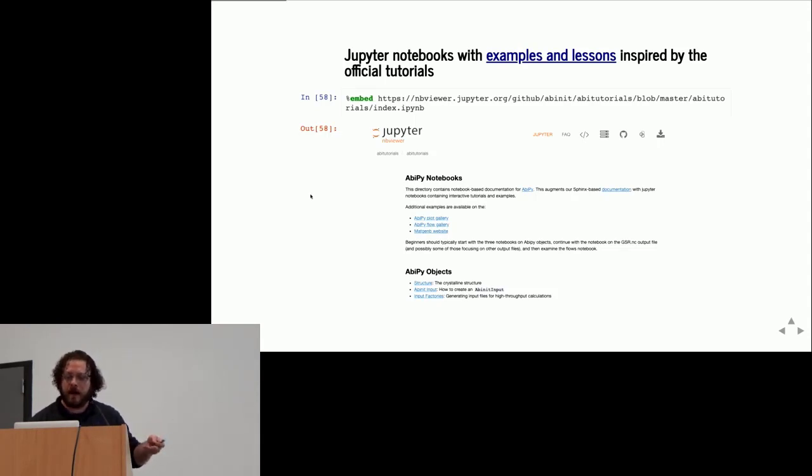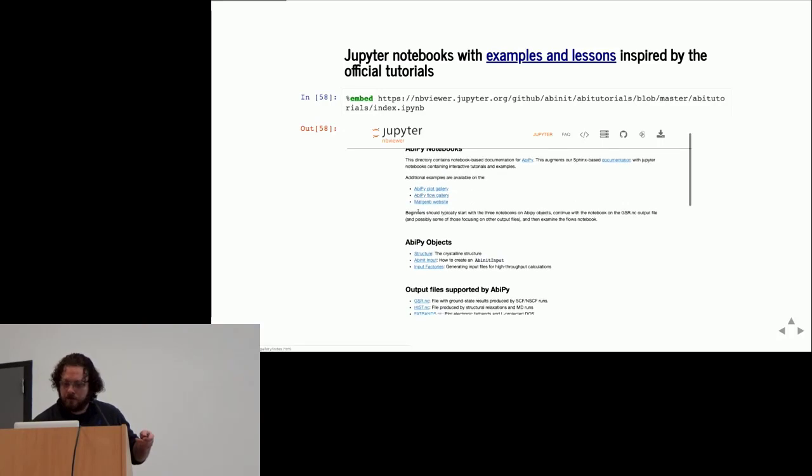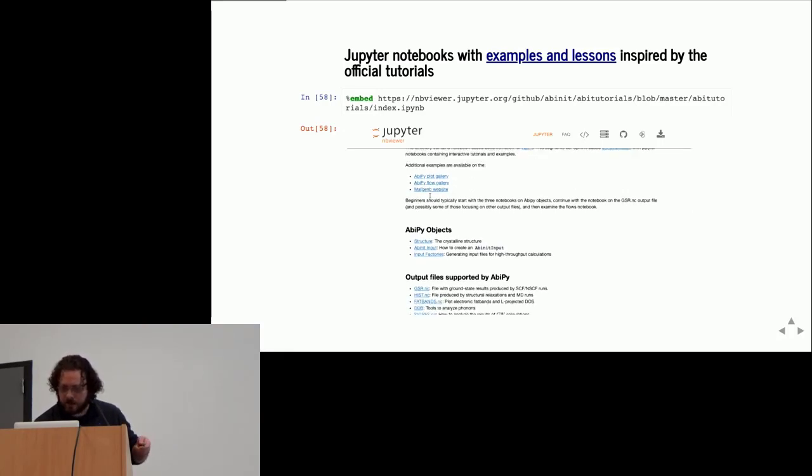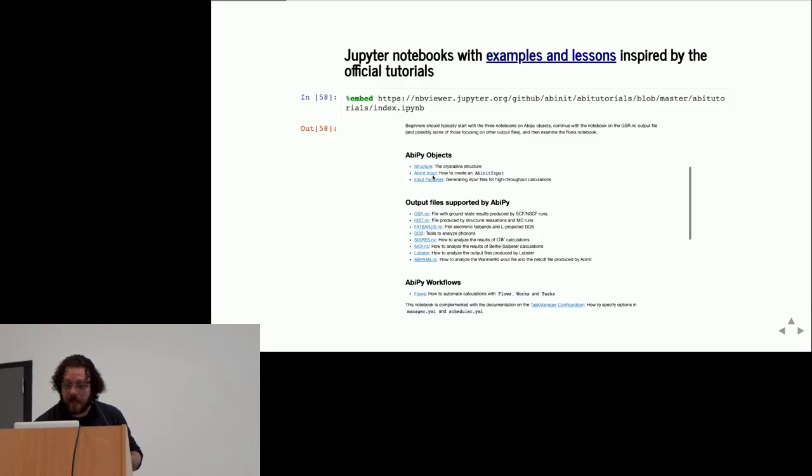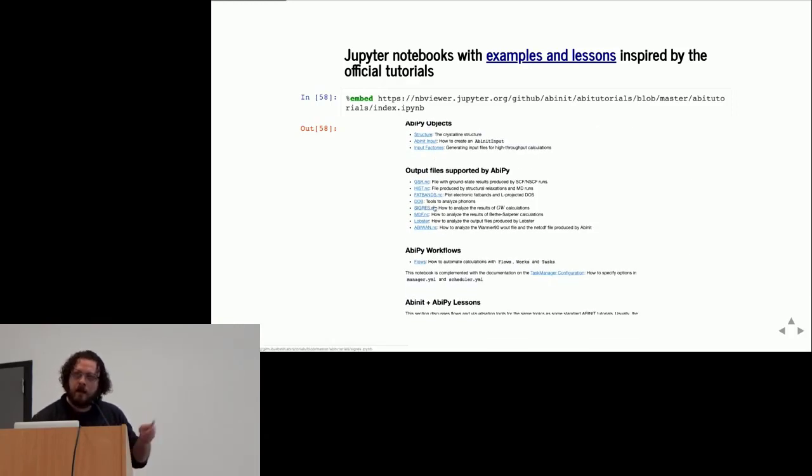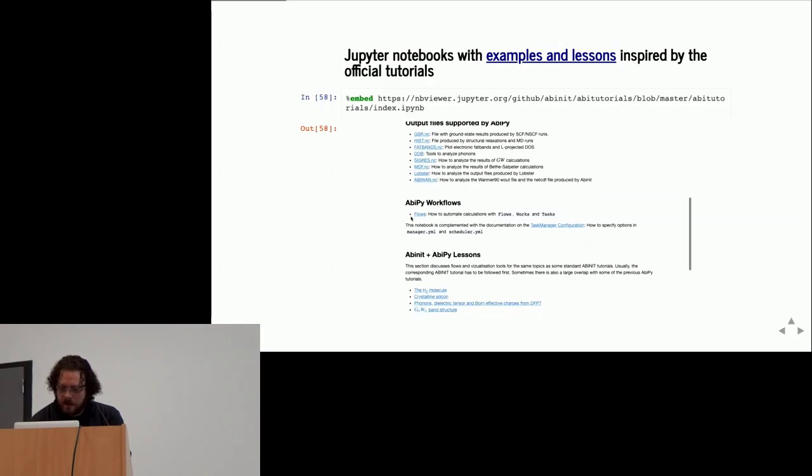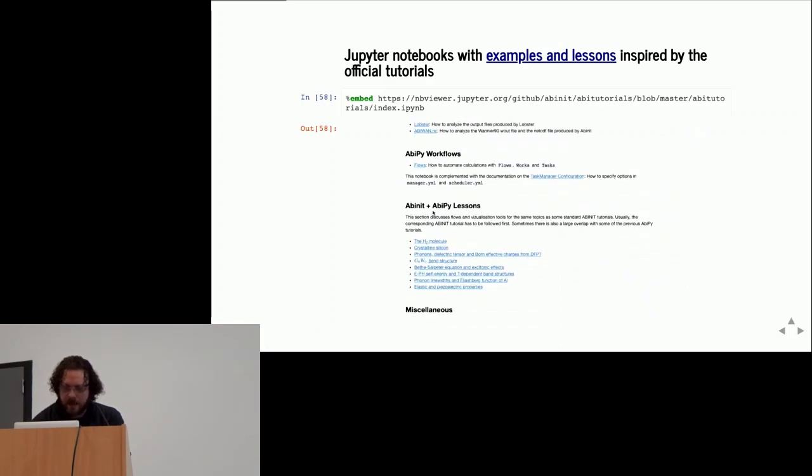The idea is to rewrite some of the official ABINIT tutorials in Python with AbiPy. This is the notebook where we have the first part with links to the Materials Project and PyMagen for each object. We documented the API and methods. For each output file, we have a notebook with examples showing how to produce figures or tables. In the last part, we have the ABINIT plus AbiPy lessons inspired by the official tutorials, but everything is reformulated in Python.